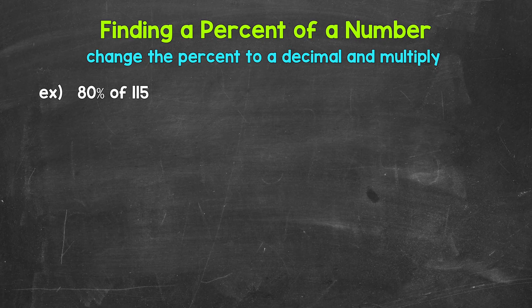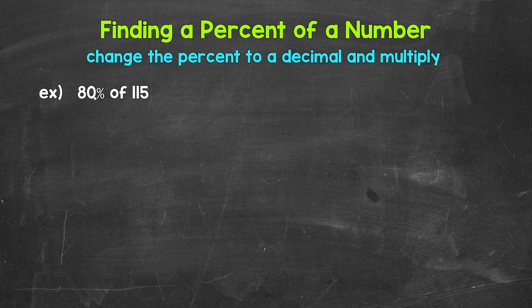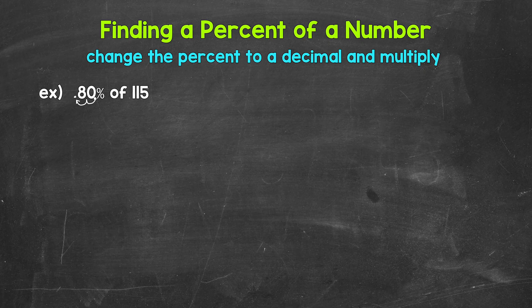To convert a percent to a decimal, we divide by 100. And a quick way to do that is move the decimal twice to the left. The decimal comes after a whole number, so right here for 80%. And we move it once, twice to the left, and we get 0.80, 80 hundredths.